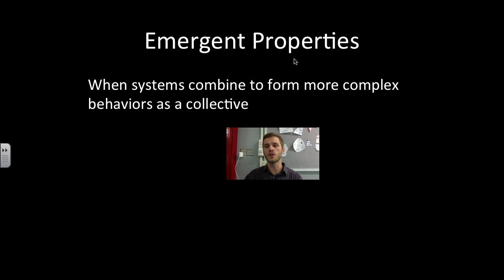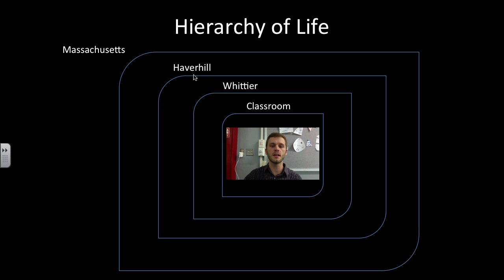This is the definition of emergent properties. It's when systems combine to form more complex behaviors as a collective. If we look at this system back here, the classroom is going to behave a lot differently in Whittier than if we look at Massachusetts. Different properties emerge.